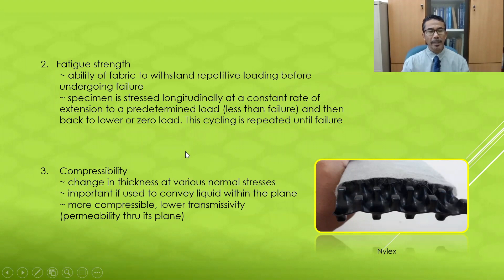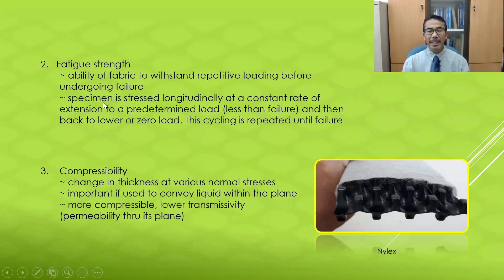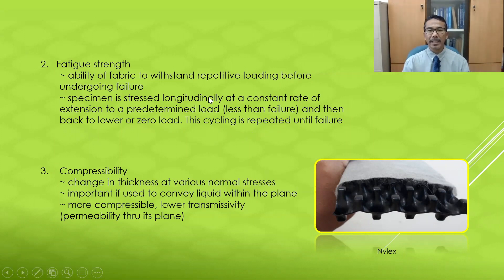The second mechanical property is fatigue strength, which refers to the ability of the fabric to withstand repetitive loading before failure. The specimen is stressed longitudinally at a constant rate of extension to a predetermined load — normally less than the failure load — then the load is released to zero, and this loading cycle is repeated until the material fails.